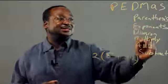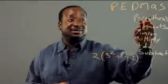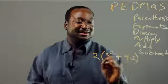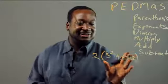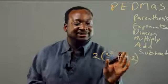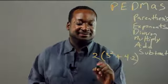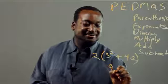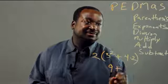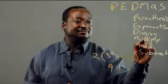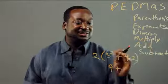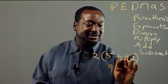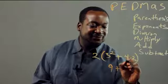We're going by this chart here. We do parentheses first, and then we're inside the parentheses. We solve for the exponents — that's 9. Then we do our division and then multiplication. 4 times 2 is 8.